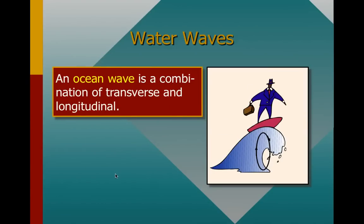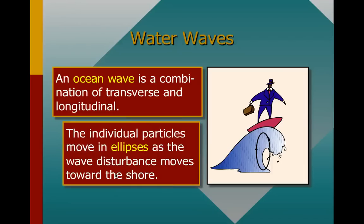Some waves are combinations of both longitudinal and transverse. An ocean wave, for instance, is a combination of transverse and longitudinal motion. As the wave moves, we have both an up and down motion of the individual particles, but some of those particles also move side to side because of the compressibility of water. So individual particles actually move in an ellipse as the wave disturbance moves toward the shore, rather than moving just up and down or just left and right.